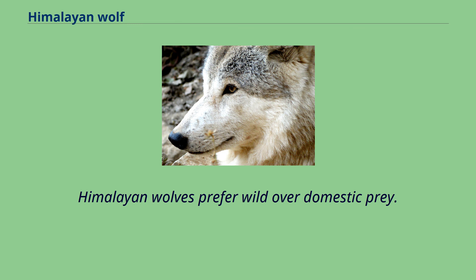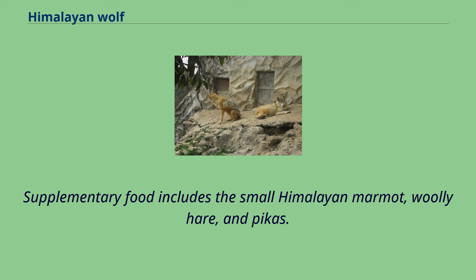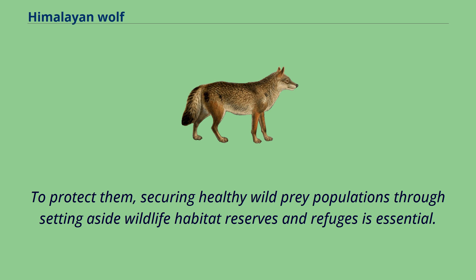Himalayan wolves prefer wild over domestic prey. They prefer the smaller Tibetan gazelle over the larger white-lipped deer, and they prefer the plains-dwelling Tibetan gazelle over the cliff-dwelling bharal. Supplementary food includes the small Himalayan marmot, woolly hare, and pikas. Himalayan wolves avoid livestock where wild prey is available, but habitat encroachment and the depletion of wild prey populations is expected to lead to conflict with herders. To protect them, securing healthy wild prey populations through setting aside wildlife habitat reserves and refuges is essential.